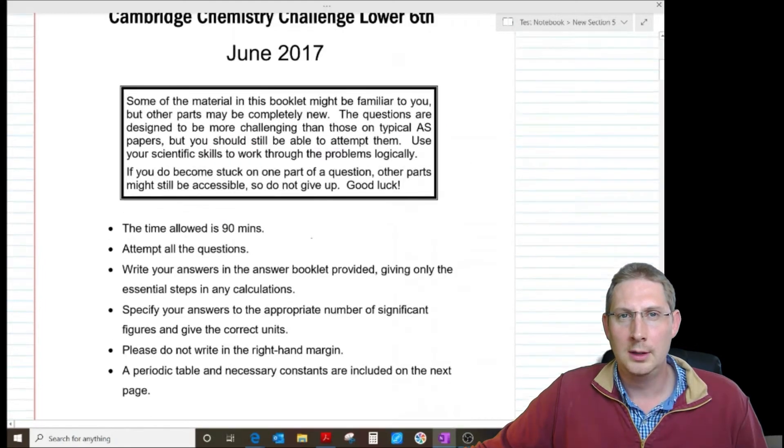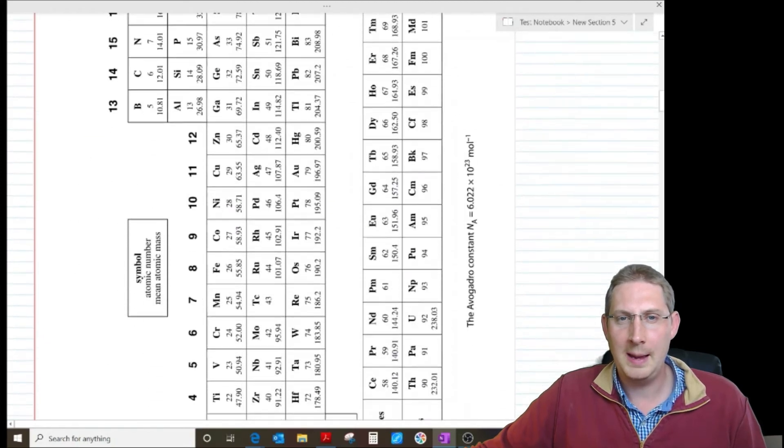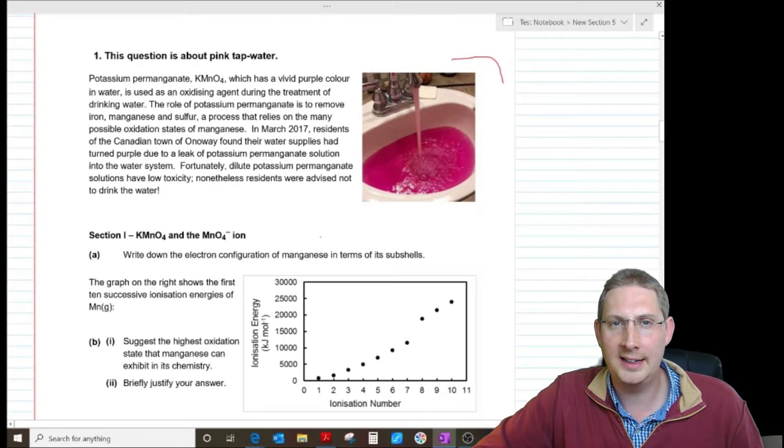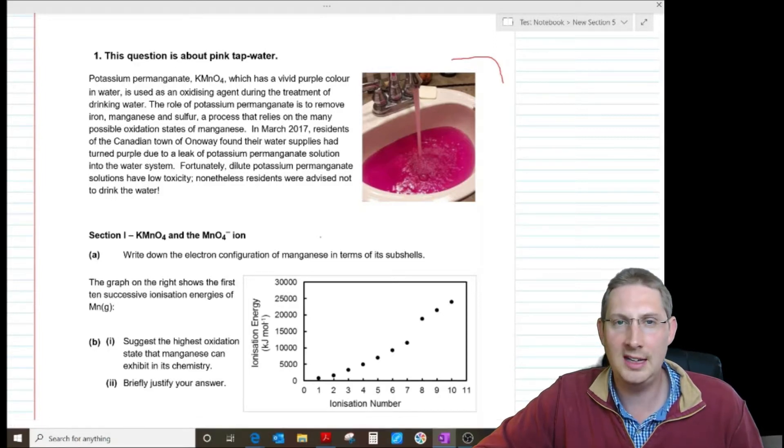Okay, you've got 90 minutes to do this paper. Periodic table at the front. Question about pink tap water. Potassium permanganate vivid purple colour used as an oxidising agent to remove iron, manganese and sulphur, relies on the many possible oxidation states of manganese. In March 2017, residents of the Canadian town of Onoway found their water supplies had turned purple due to a leak of potassium permanganate solution to the water system. Fortunately dilute solutions are not toxic, however residents were advised not to drink the water.